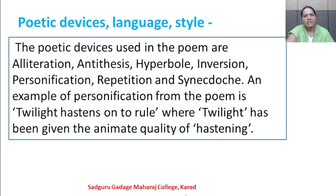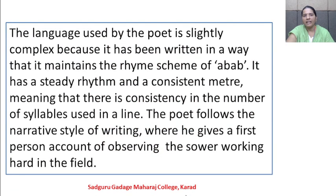The poetic devices used in the poem are alliteration, antithesis, hyperbole, inversion, personification, repetition, and synecdoche. An example of personification from the poem is 'twilight hastens onto rule', where twilight has been given the animate quality of hastening. The language used by the poet is slightly complex, written in a way that maintains the rhyme scheme of ABAB. It has a steady rhythm and consistent meter, meaning consistency in the number of syllables per line. The poet follows the narrative style, giving a first-person account of observing the sower working hard in the field.